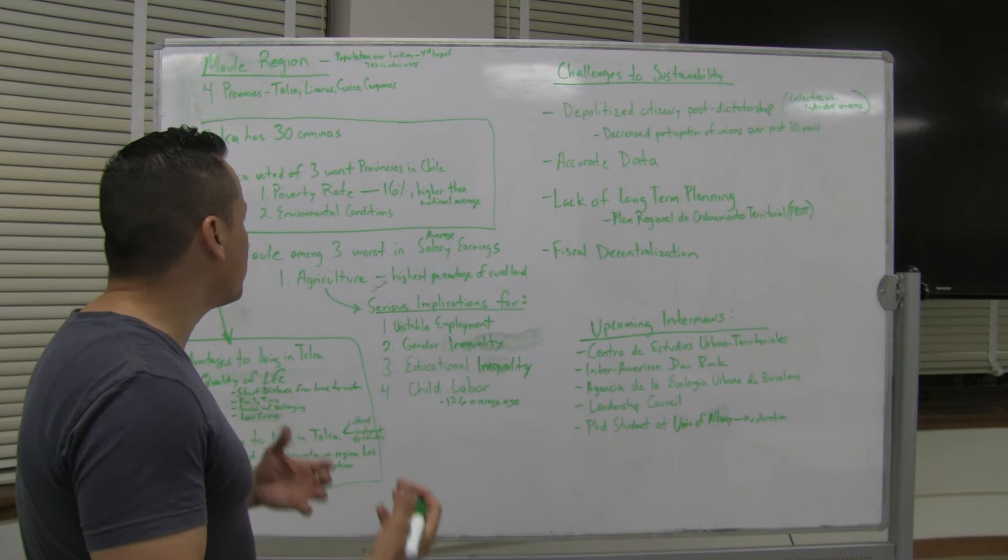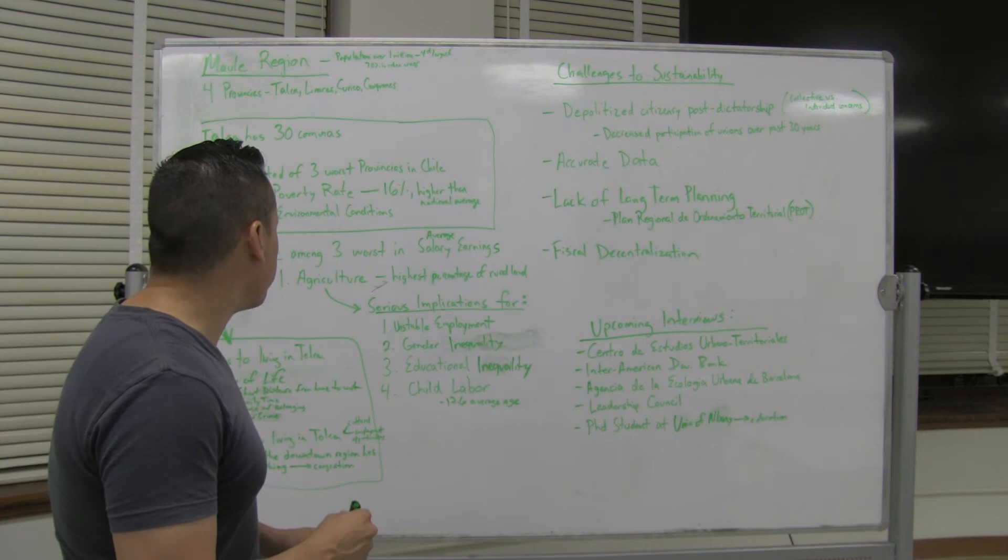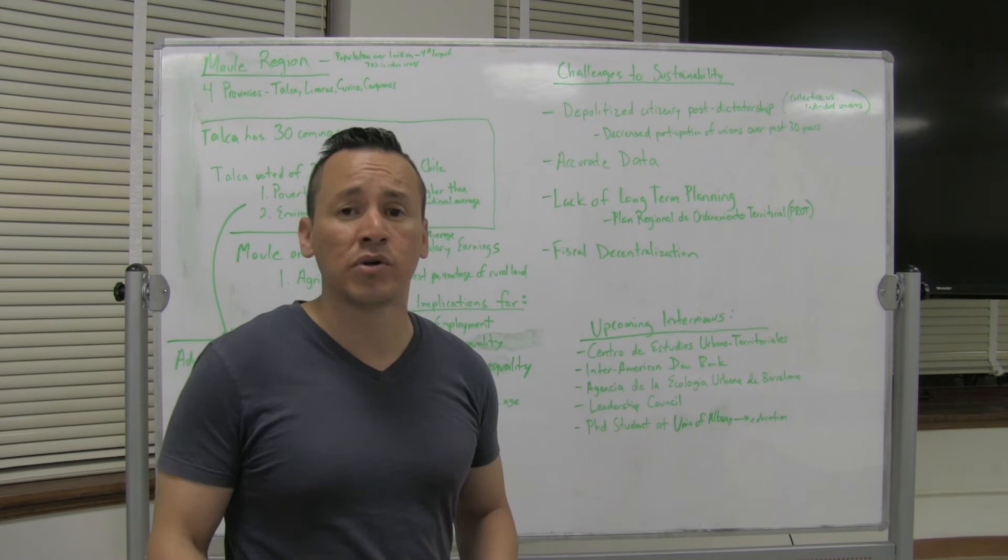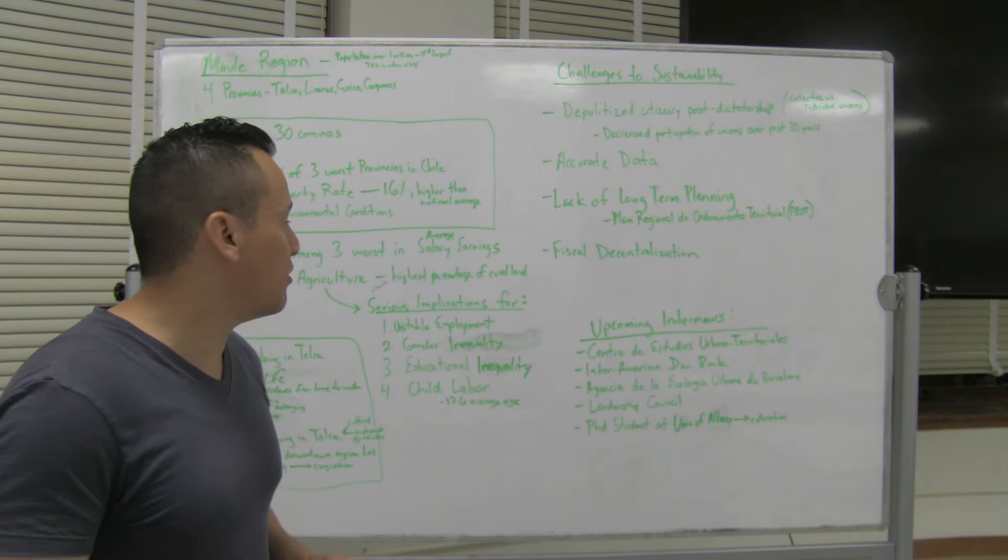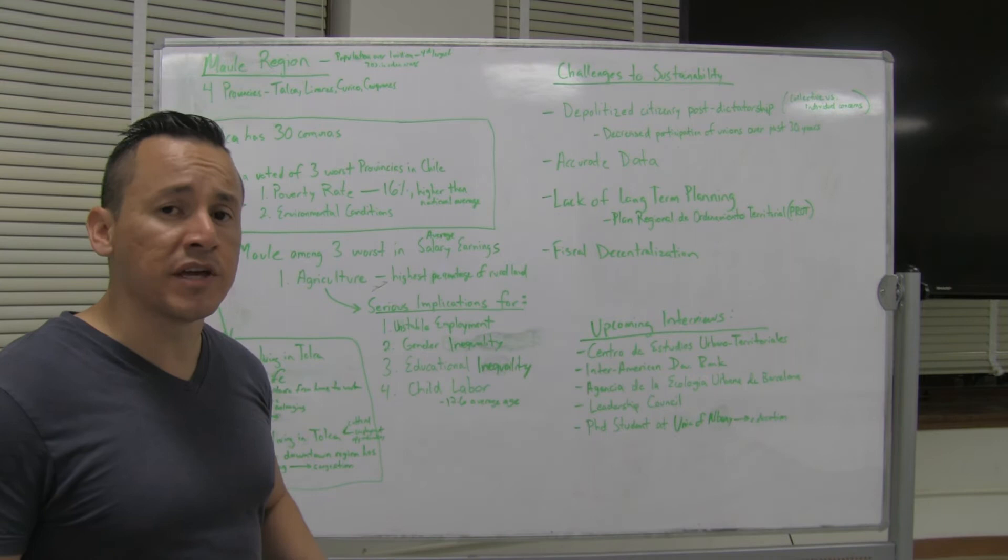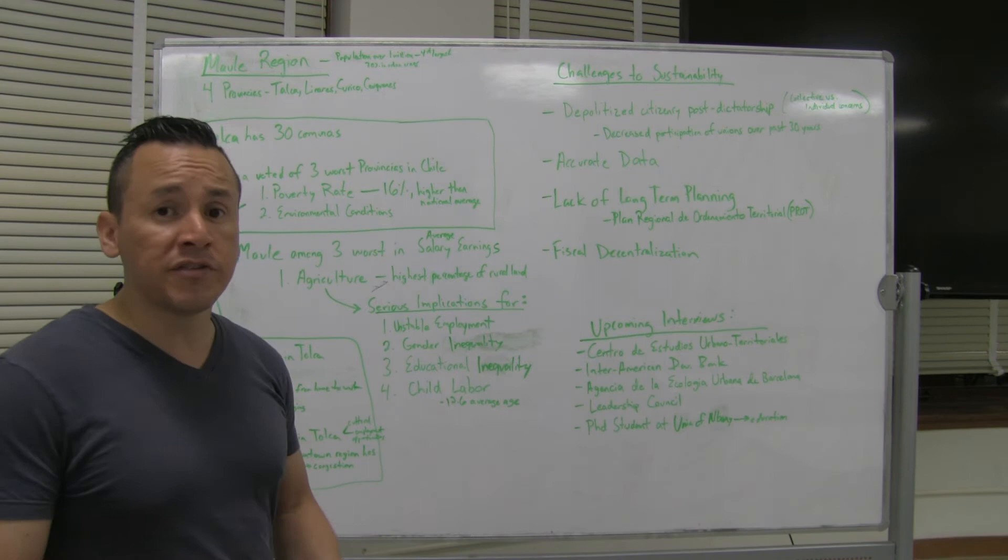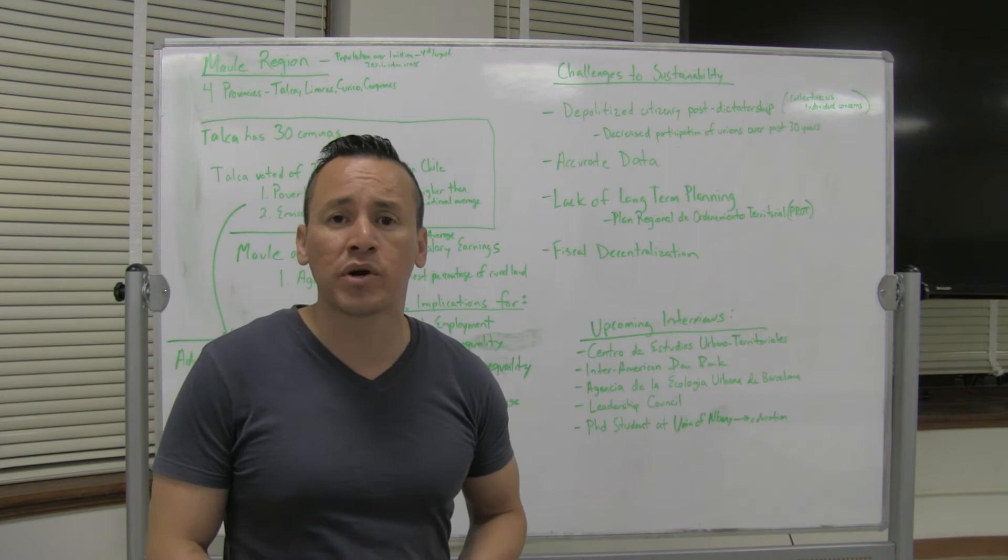And then when asking people about the disadvantages of living in Talca, the two most common answers were a lack of cultural opportunities and lack of employment opportunities. So when we talk about the Maule region, we also, thanks to an interview that I had with a local professor there, we found that the Maule region is among the three worst also in average annual salary. Most of this has to do with the fact that it is a strong agricultural sector. So the fact that it's agricultural has serious implications for various aspects of society there. Number one, it results in unstable employment.